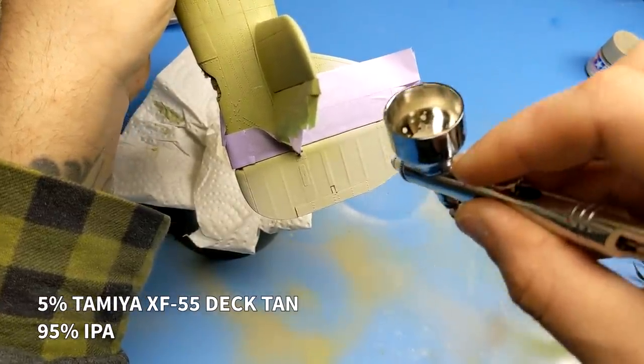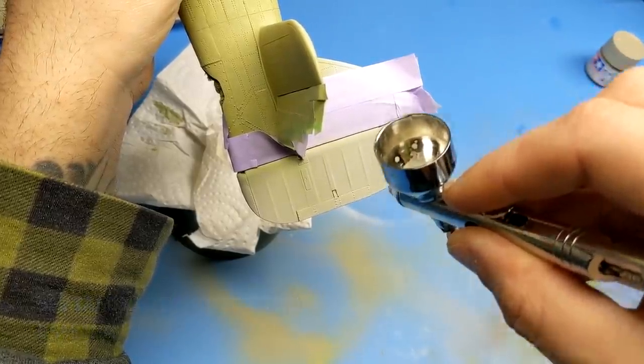The lesson here is that Tamiya XF4 yellow green is a very potent color be careful with that. To add a little more contrast to the paint I decided to paint the rudder which is covered in canvas with a deck tan.